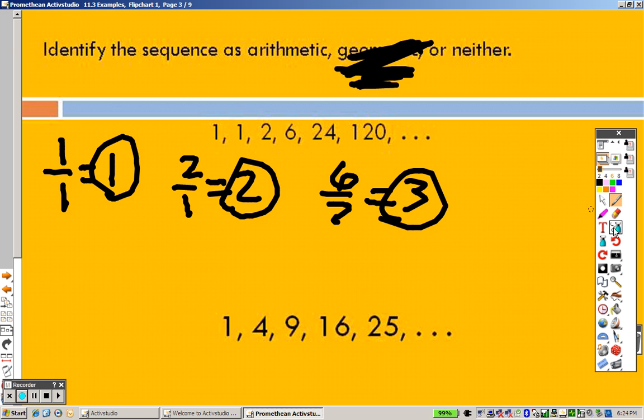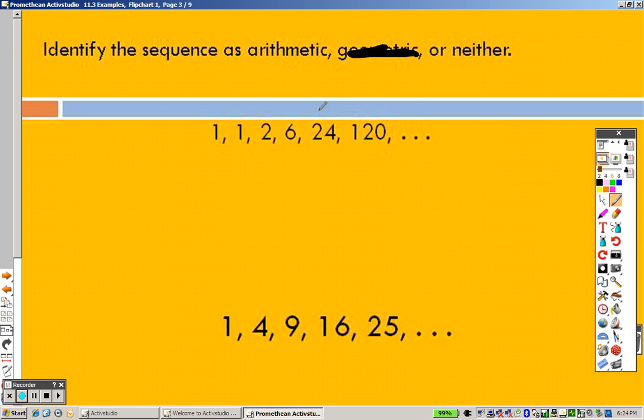Okay, moving on. We know it's not geometric. This goes up by nothing. Then it goes up by 1. Then it goes up by 4. It's not going up by the same amount, so it's not arithmetic. Meaning there's only one item it can be, and the first one is neither.